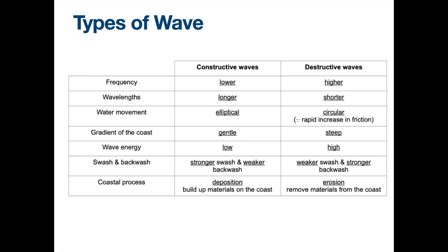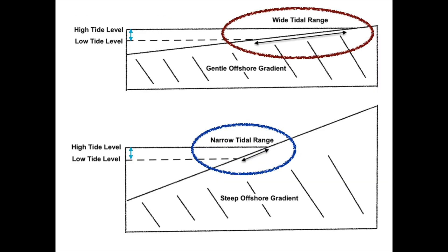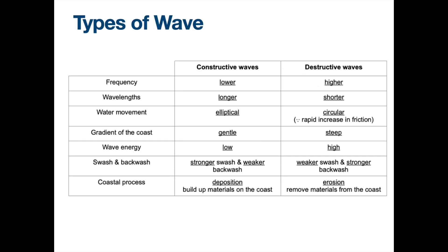Constructive waves are usually found along gentle coasts because they have a strong swash and weaker backwash — two steps forward, one step back — more likely to result in deposition. Destructive waves are the opposite: weaker swash and stronger backwash, usually along steeper gradients.